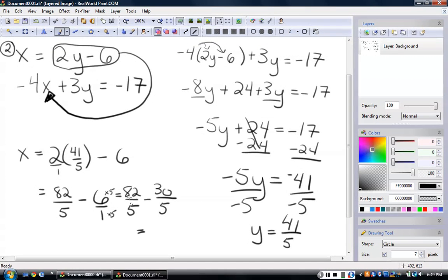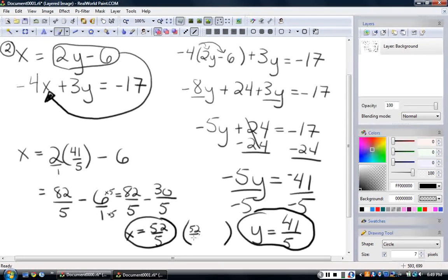And now that I have two fractions with the same denominator, I can subtract 82 over 30 minus, 82 fifths minus 30 fifths is equal to, leave the denominator the same, subtract 82 minus 30, and you get 52. And that's my answer for x. So there's my two solutions, or my solution, rather. And we've been writing those like this in point form, 52 fifths, comma, 41 fifths. That's my answer right there.